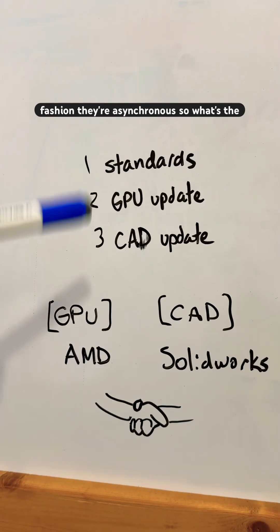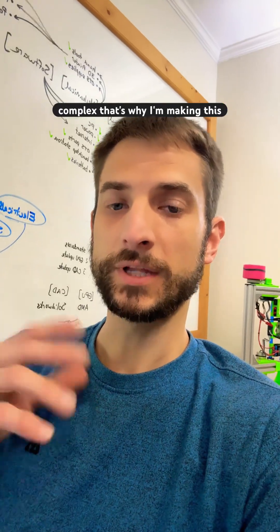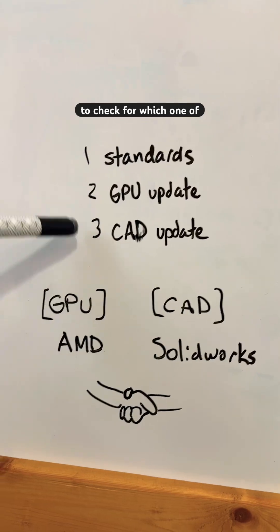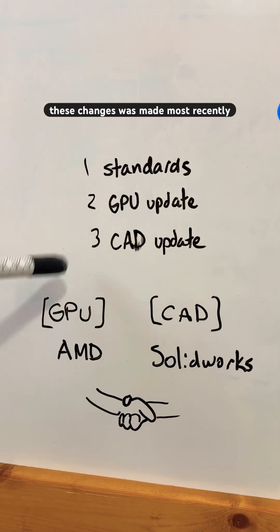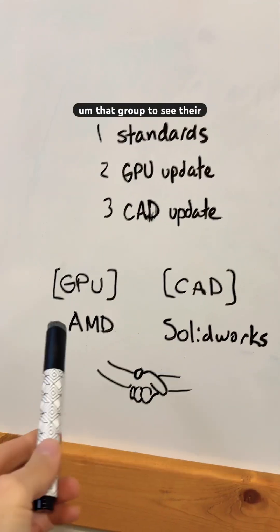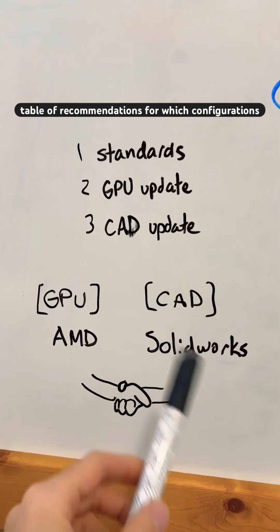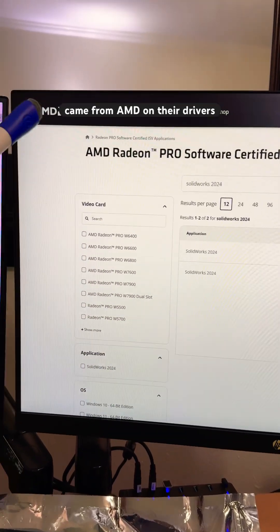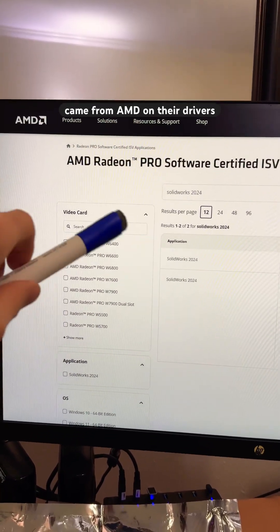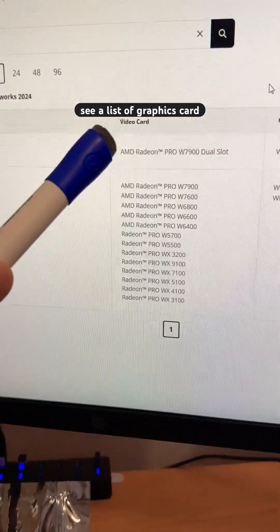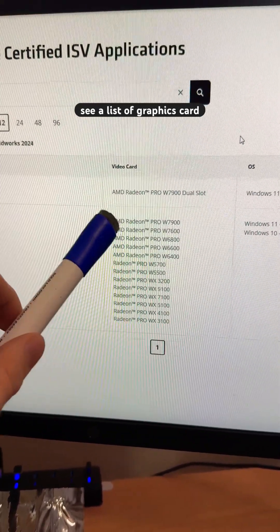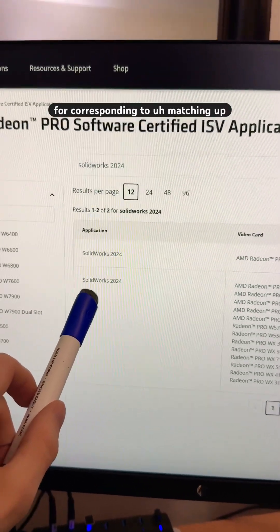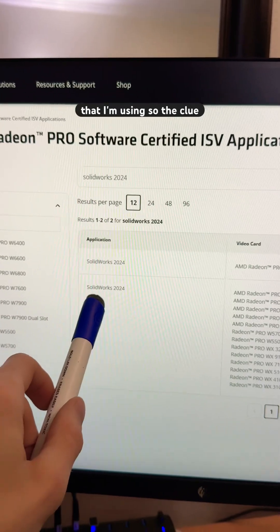So what's the solution for you? It's a little complex, that's why I'm making this video. In my case, I needed to check which one of these changes was made most recently and then follow that group to see their table of recommendations for which configurations to use. My latest changes came from AMD on their drivers, and you'll see a list of graphics cards they've created new updates for, corresponding to matching up with SOLIDWORKS for the version I'm using.